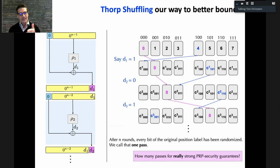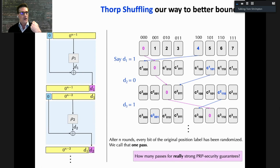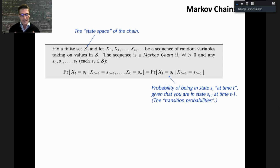For an n-bit maximally unbalanced Feistel, after n rounds you've made one complete pass — randomized every bit of the initial input. The question is: how many passes are needed to get strong PRP security guarantees, specifically security against adversaries making a number of queries close to the entire domain size? The key insight is we can import results from the shuffle literature.